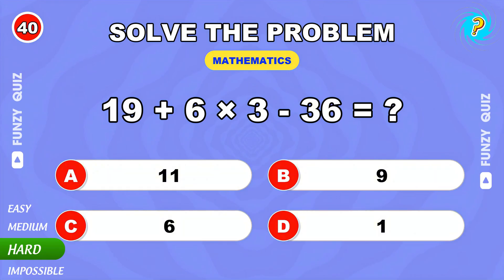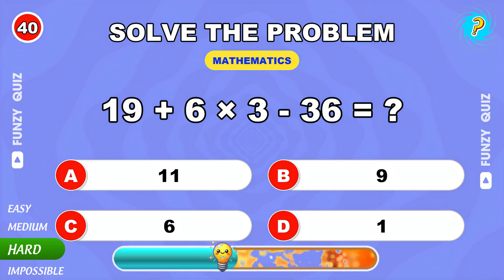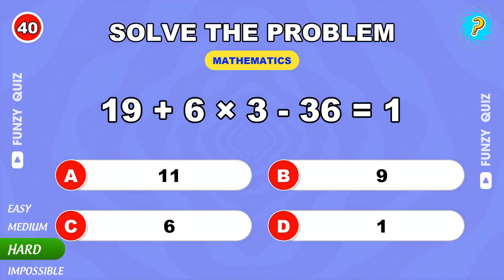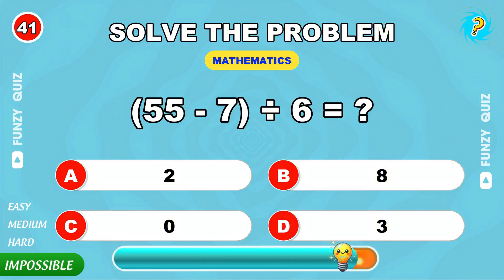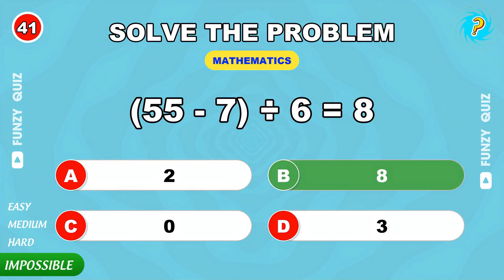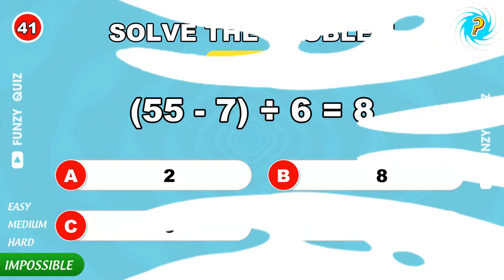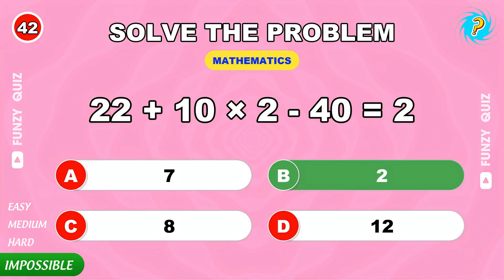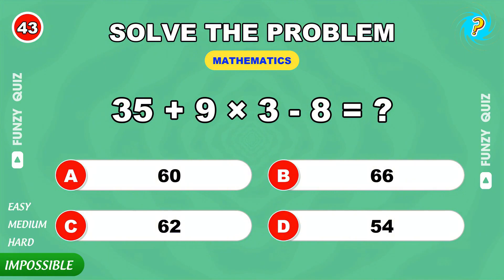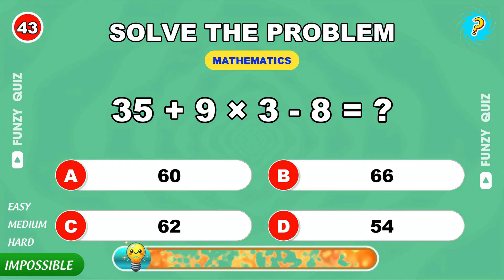19 plus 6 times 1. 1. Ultimate challenge, time for the impossible level. Good luck. 55 minus 7 divided by 6. 8. Work out 52 times 2 minus 40. 2.